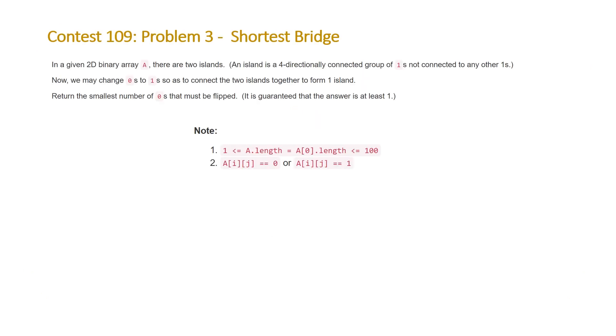The problem states in a given 2D binary array A there are two islands. An island is a four-directionally connected group of ones not connected to any other ones. Now we may change zeros to ones to connect the two islands together to form one island. Return the smallest number of zeros that must be flipped. It's guaranteed that the answer is at least one.